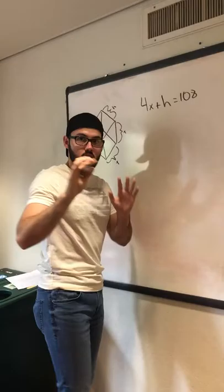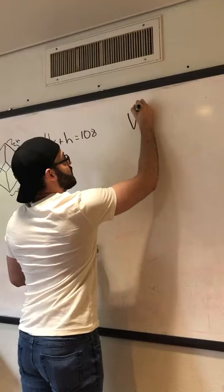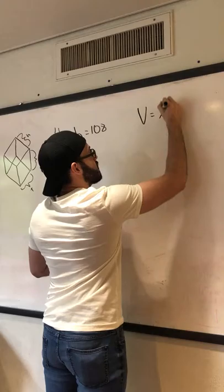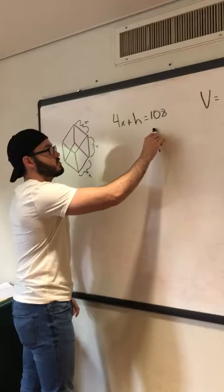Now what we need to do—hold on. The next equation would be the volume equation, which would be an equation that has both the X and the H. So we have volume is X squared times the height. Now we have these equations.